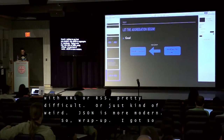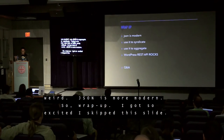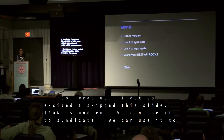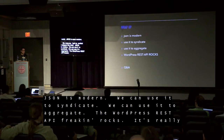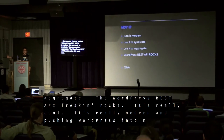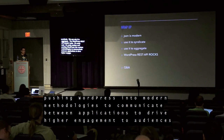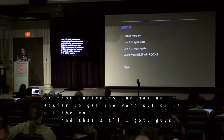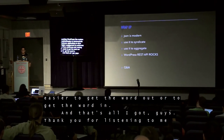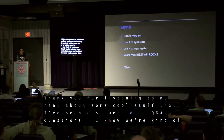Wrap up. JSON is modern. We can use it to syndicate. We can use it to aggregate. The WordPress REST API is really cool and really modern, pushing WordPress into modern methodologies to communicate between applications, drive higher engagement to audiences, and make it easier to get the word out or bring the word in. That's all I've got, guys — thank you for listening to me rant about some cool stuff I've seen customers do.